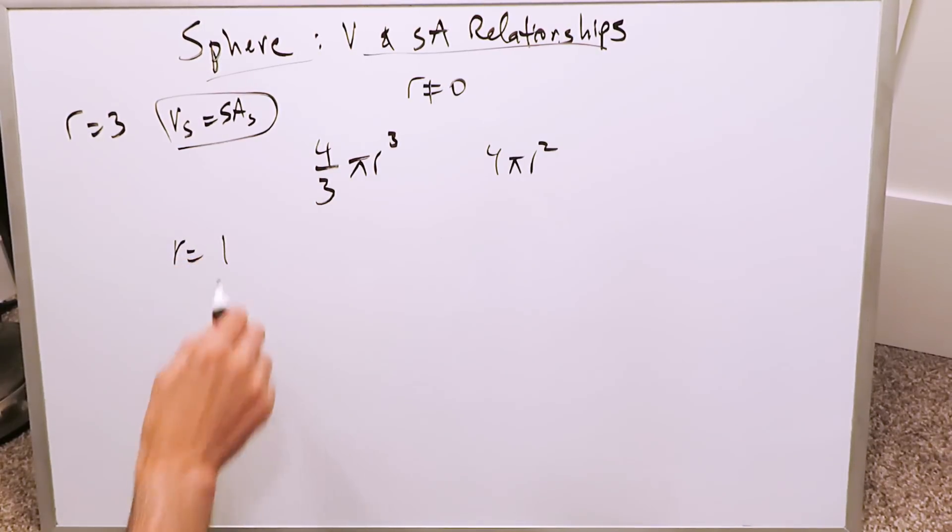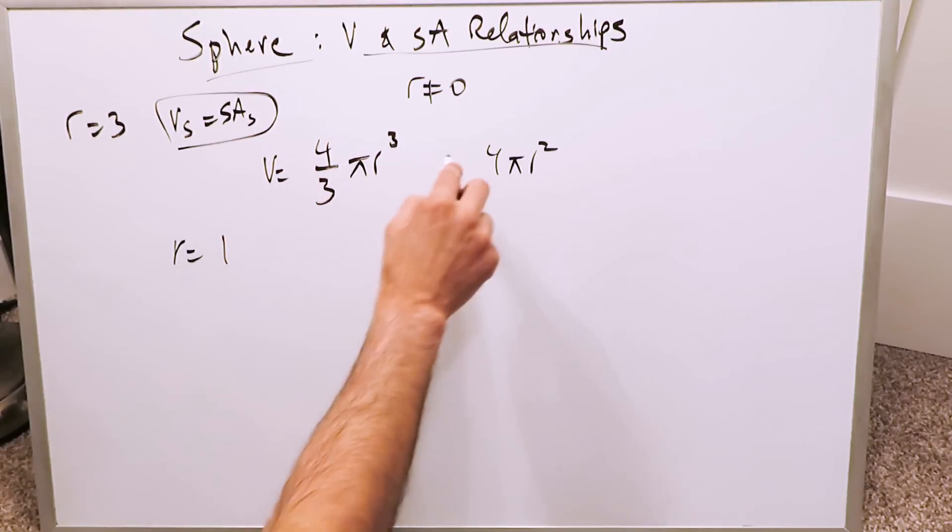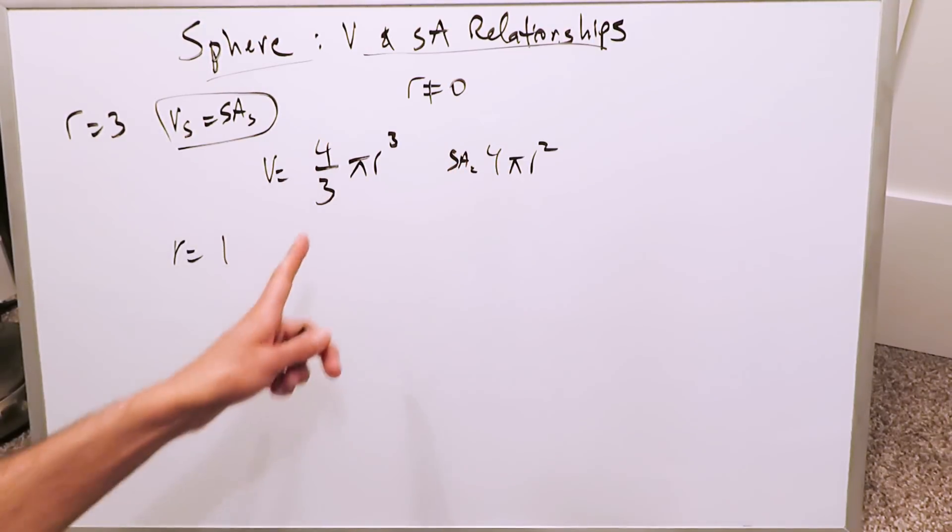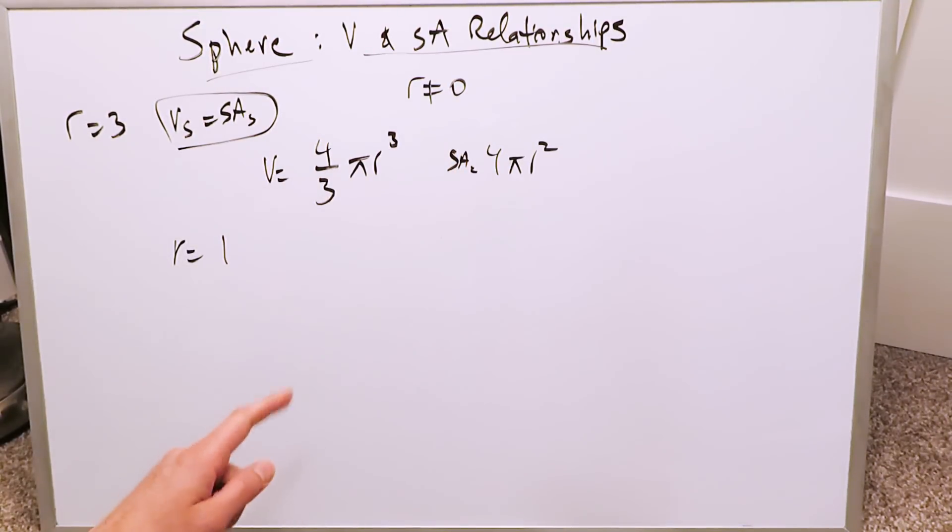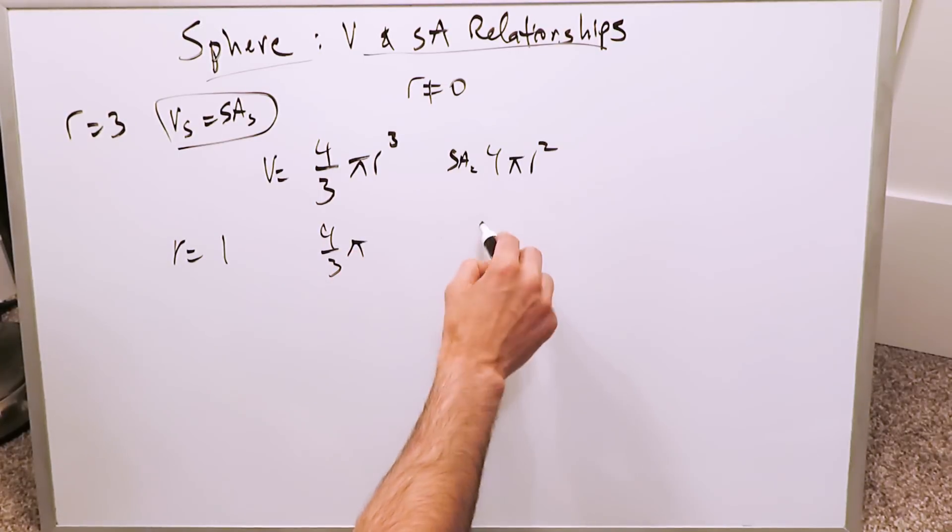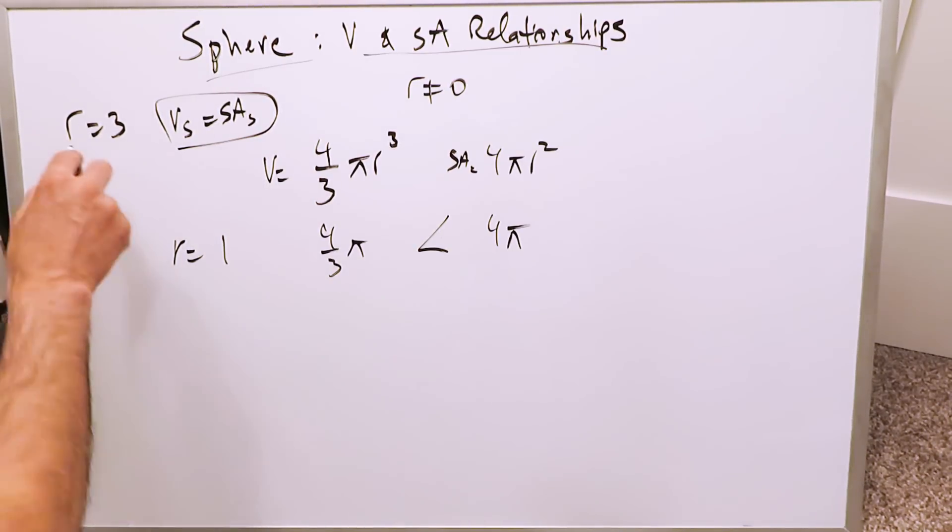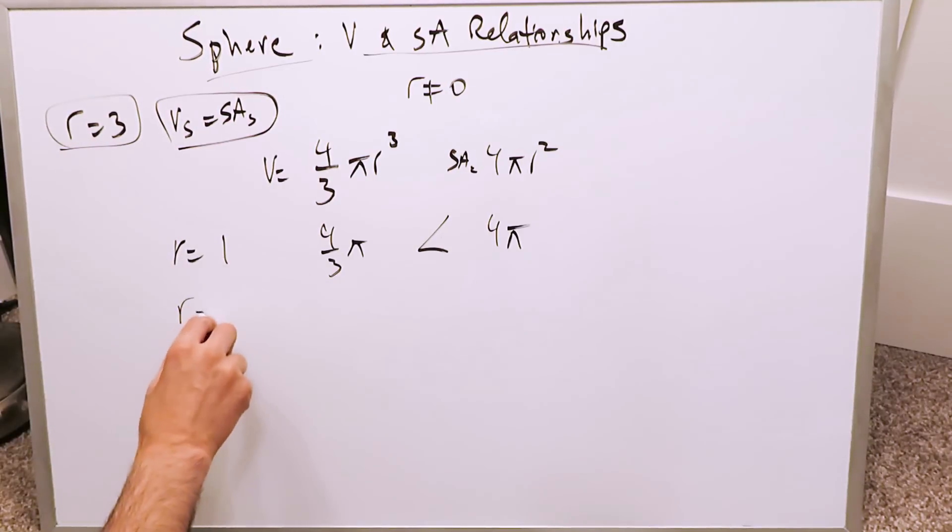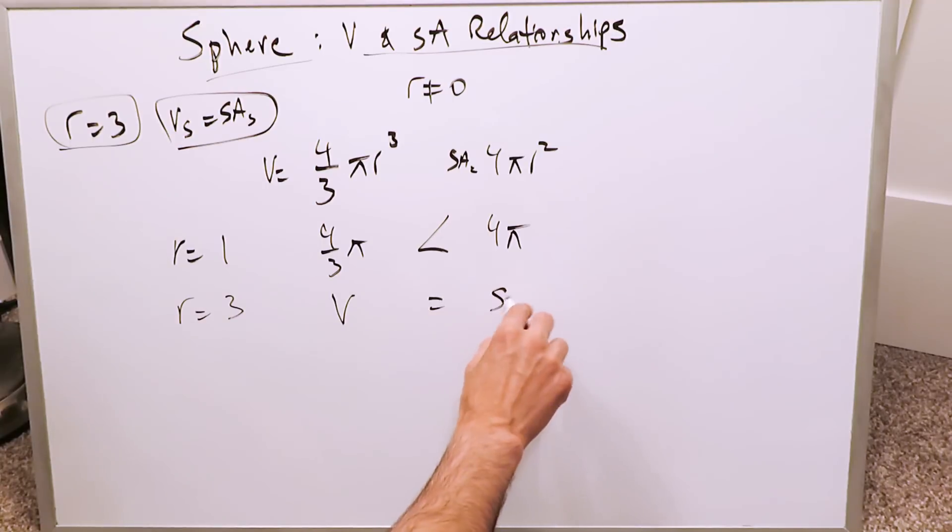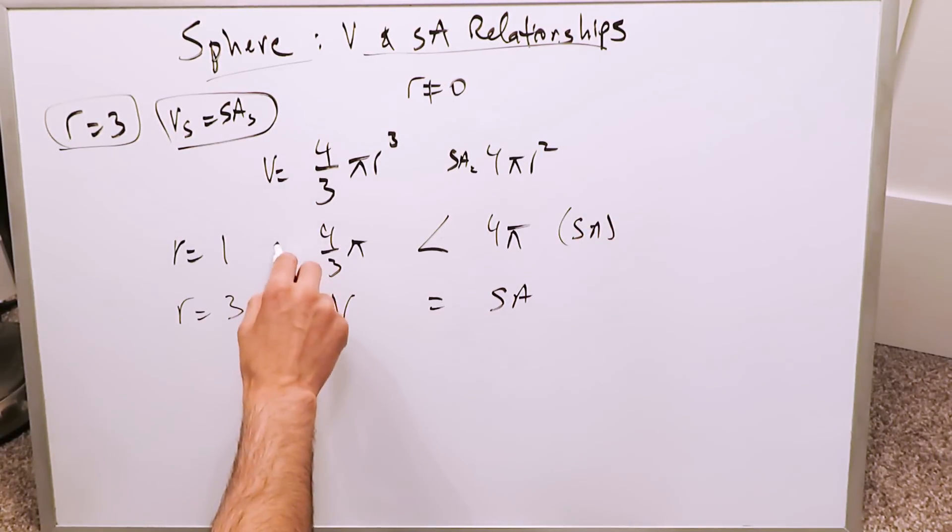If radius were equal to 1, we know this here is volume, this here is surface area. What would the volume be? If the radius is equal to 1, volume is equal to 4/3 π. Surface is equal to 4π. Which one is larger? That's larger. You don't need to do any more values. We already know this is our cutoff point. When radius is equal to 3, the volume is equal to surface area. Here we know the surface area is larger and here the volume is smaller. I've shown that to you.